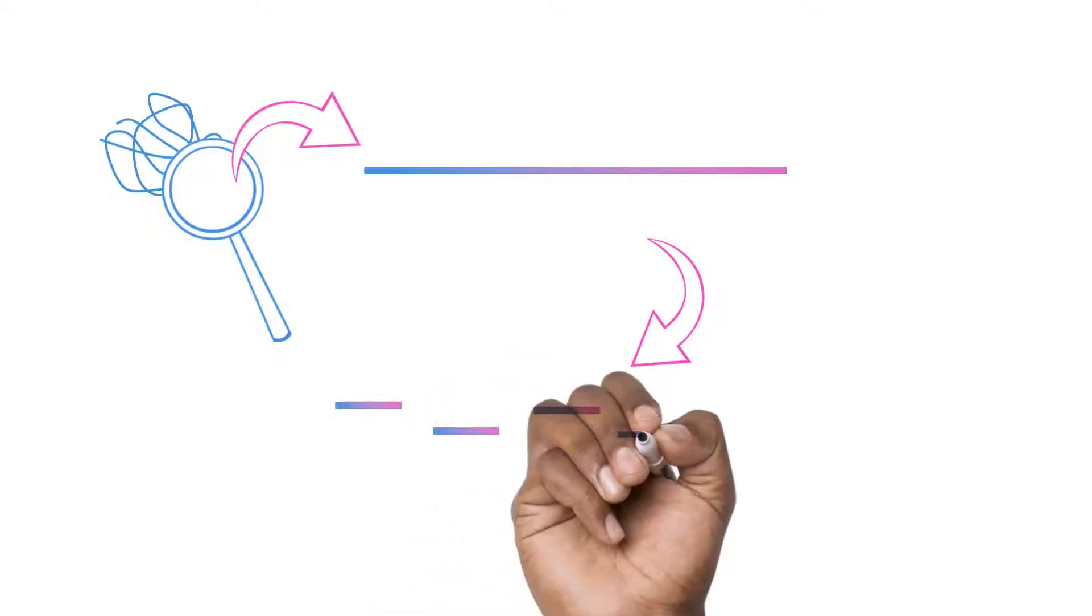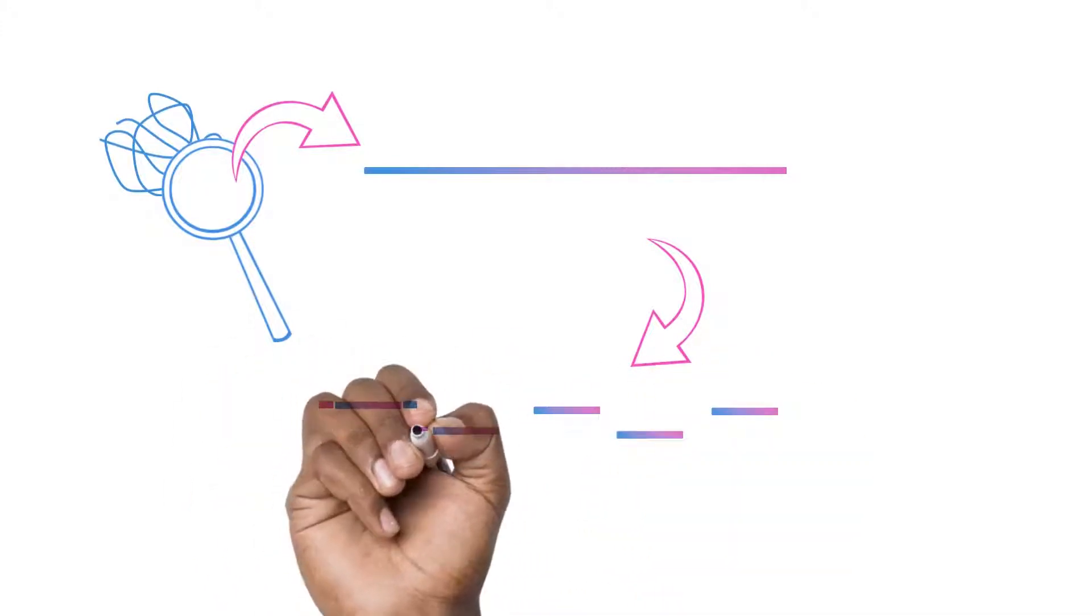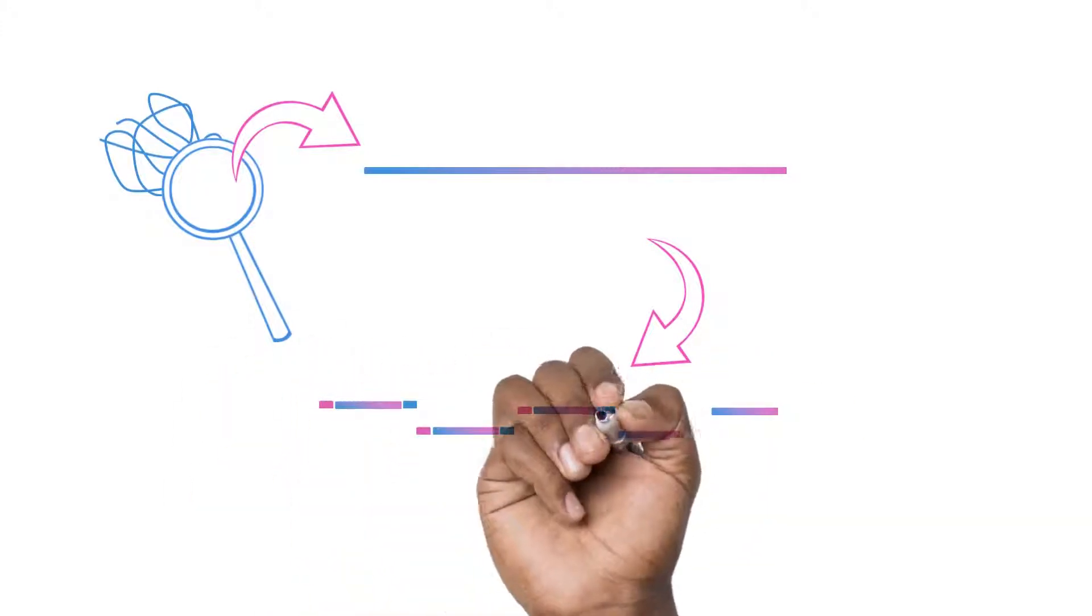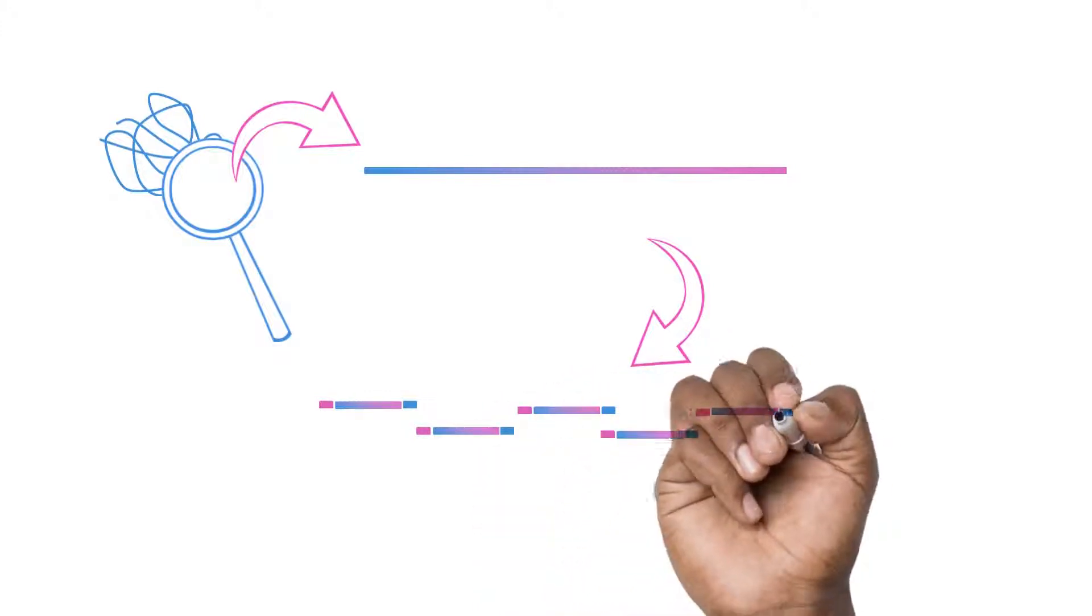Then little DNA tags are added to the end of each insert. These tags are called adapters. They allow the inserts to bind to the chip in your NGS instrument.